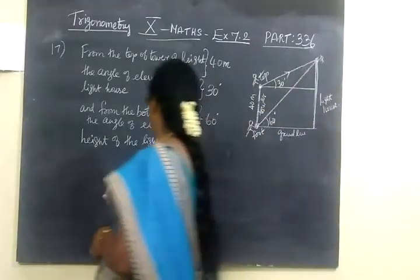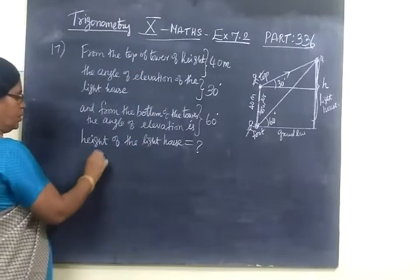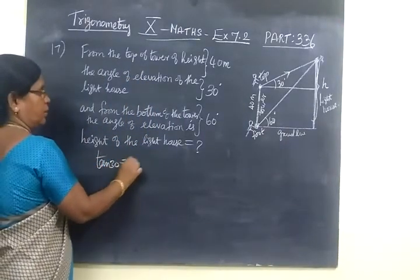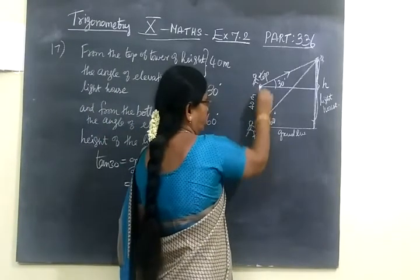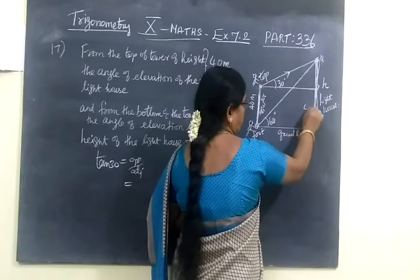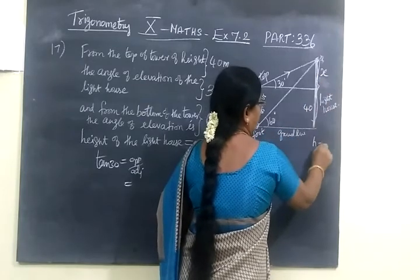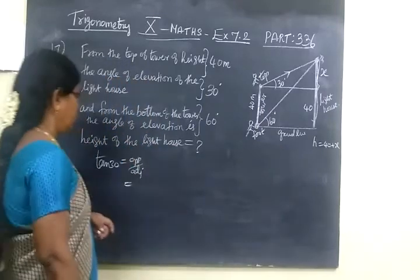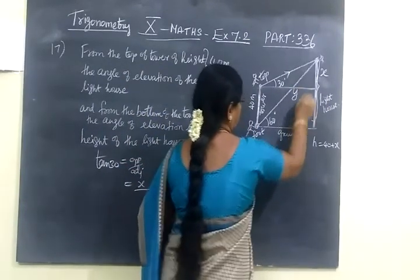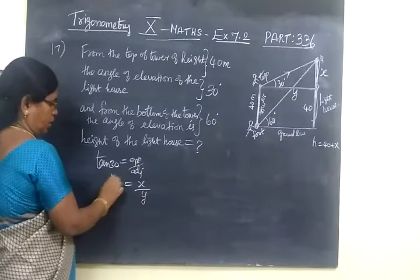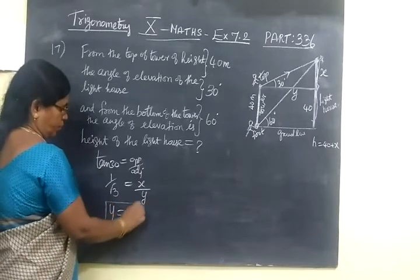Now come to the question. You have to find the height of the lighthouse — that means this full length you have to find. So now consider tan 30. Tan 30 equals opposite over adjacent. The height of the tower is 40, so parallel to this is also 40. Let the extra height above 40 be x, so the opposite side is 40 plus x. Let the adjacent side be y. Tan 30 equals 1 by root 3, so cross multiply: y equals x root 3. Mark it as equation 1.